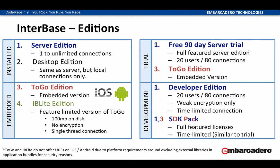Interbase comes in a number of editions. The installed editions are the server and the desktop editions, and the library editions are the to-go and the IB Lite edition. We offer trial editions across the products — a full 90-day installed trial, and an embedded to-go edition trial that provides full encryption testing capabilities. We provide a developer edition with 20 users and 80 concurrent connections. We also have an SDK pack launched this year, available through our channels, that provides full testing licenses for fully testing your deployable, embeddable servers. It's $99 for the year — really worth having a look at.